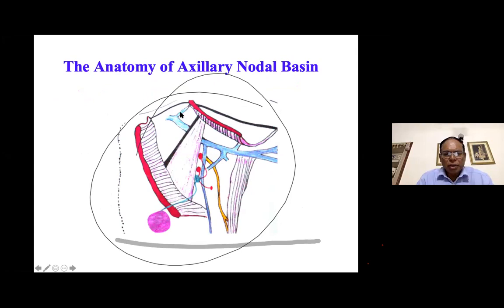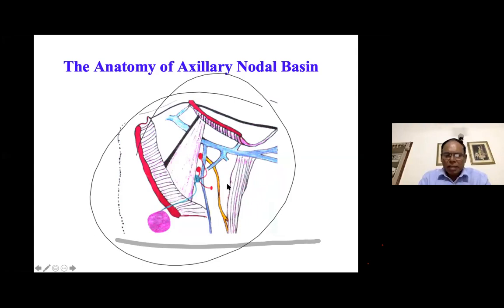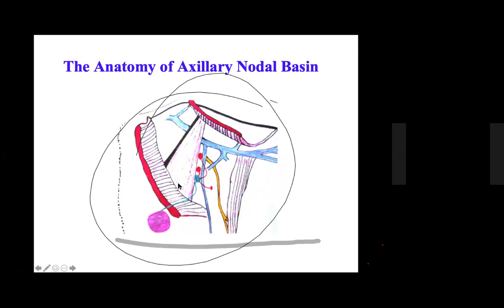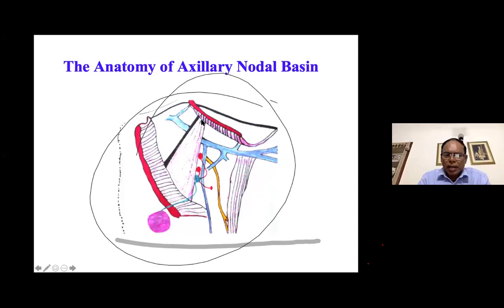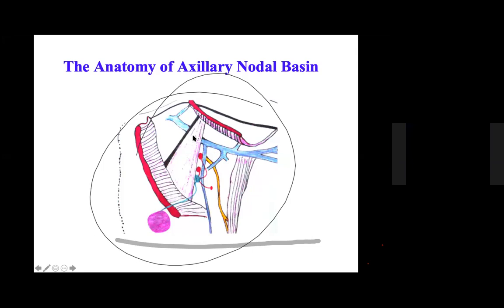This is a cartoon diagram showing the axillary vein and the pectoralis minor. Pectoralis major has been divided and opened up to demonstrate the axilla. Suppose there is a primary tumor in the breast — the lymphatics carry the tumor cells to the first station node located in the lower part of the axilla. This part of the axilla is called Level 1, which is the axillary nodal basin located lateral to pectoralis minor.